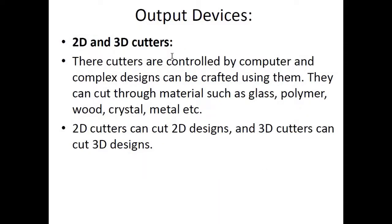The next output devices are 2D and 3D cutters. These cutters are controlled by a computer and complex designs can be crafted using them. They can cut through materials such as glass, polymer, wood, crystal, metal, and stone. 2D cutters can cut 2D designs, for example cutting different gear patterns out of a metallic sheet. 3D cutters can cut 3D designs, for example feeding in a block of marble and the 3D cutter would craft an ashtray, an art piece, a showpiece, or a flower vase out of it.